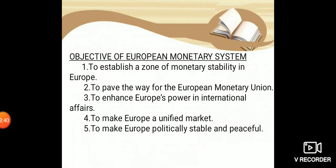Objectives of the European Monetary System: The first objective is to establish a zone of monetary stability in Europe. The main objective is monetary stability in Europe and controlling currency fluctuation among European member states.